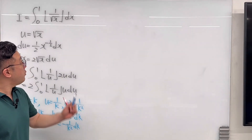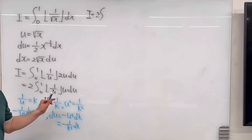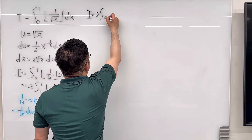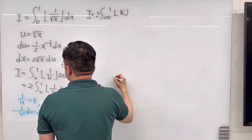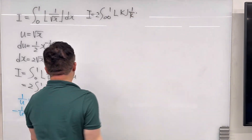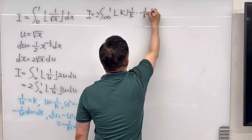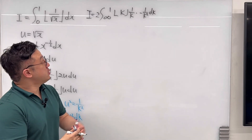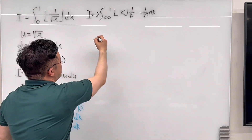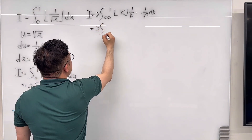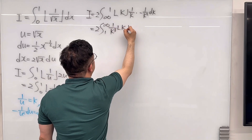Putting all of these together, we can rewrite this integral I. The integral has to be 2 times the integral — now the lower bound becomes infinity and the upper bound is 1, so from infinity to 1 — of the floor function of k, times u which is 1 over k, times du which is negative 1 over k squared dk. Switching the bounds by pulling out the negative sign, this integral becomes 2 times integral from 1 to infinity of 1 over k cubed times floor(k) dk.